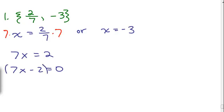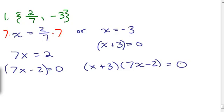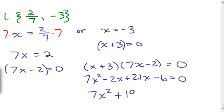Which means 7x minus 2 equals 0. And that will be one of our factors. And here all we have to do is add 3 to both sides. So there's our other factor. Then we multiply those together to get our answer x plus 3 times 7x minus 2 equals 0. We're going to do the FOIL method. x times 7x is 7x squared. Outside is minus 2x. Inside plus 21x and minus 6 equals 0. 7x squared plus 19x minus 6 equals 0.